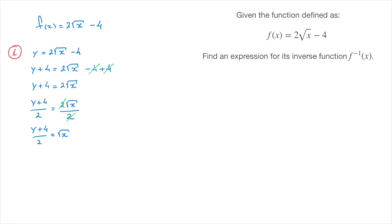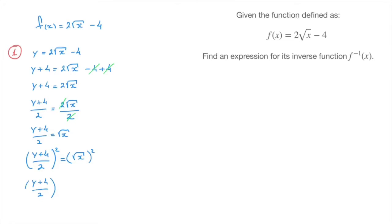Now x is still underneath the square root, so we need to get rid of that. We raise both sides to the power of 2 — squaring both sides — giving y plus 4 over 2 in parentheses, squared, equals the square root of x squared. The square root and power of 2 cancel, leaving y plus 4 over 2 in parentheses squared equals x, or x equals y plus 4 over 2 in parentheses squared. That's our first step done — we've now made x the subject.